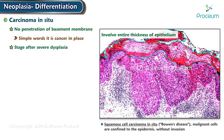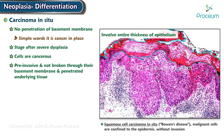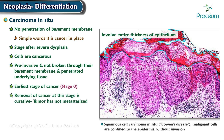There is a stage after severe dysplasia called carcinoma in situ. In carcinoma in situ, the cells are cancerous but they are pre-invasive and have not broken through their basement membrane and penetrated the underlying tissue. Carcinoma in situ is the very earliest stage of cancer, also referred to as stage 0. Removal of a cancer at this stage is curative because the tumor has not metastasized.